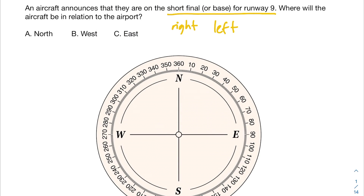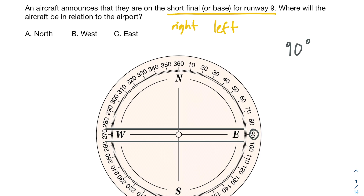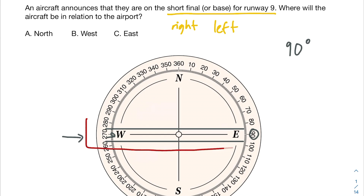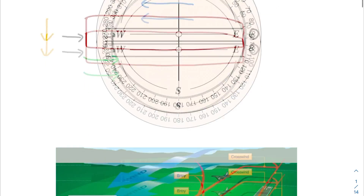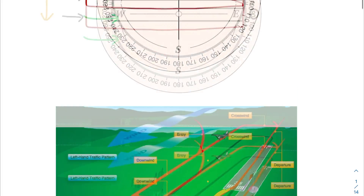We're on the short final — the last bit of the landing. So, just like the last problem, we find runway nine by appending a zero, so we'll be landing in the direction of 90 degrees. We find 90 degrees and draw our runway. As we're approaching, we're going to see the number nine, so we draw out the downwind, the base, and the final to visualize the approach.